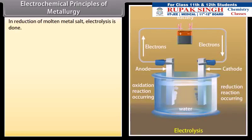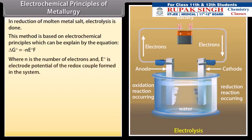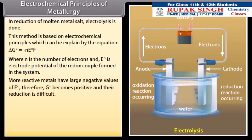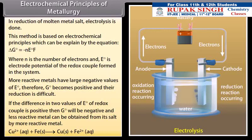Electrochemical principles of metallurgy. In reduction of molten metal salt, electrolysis is done. This method is based on electrochemical principles which can be explained by the equation ΔG° = -nE°F, where n is the number of electrons and E° is electrode potential of the redox couple formed in the system. More reactive metals have large negative values of E°. Therefore, G° becomes positive and their reduction is difficult. If the difference in two values of E° of redox couple is positive, then G° will be negative and less reactive metal can be obtained from its salt by more reactive metal.